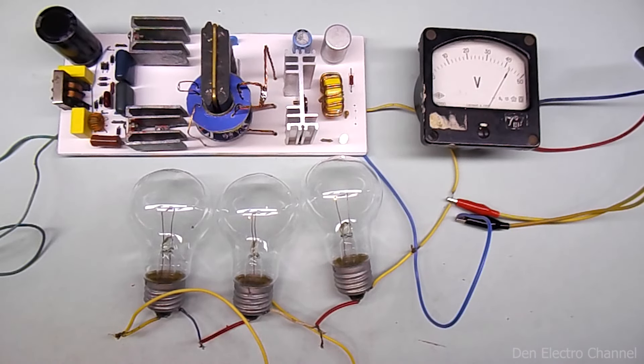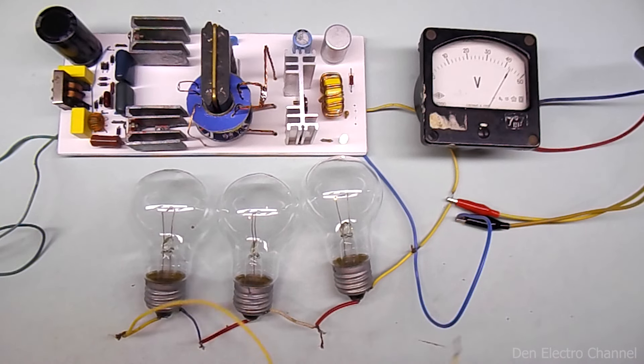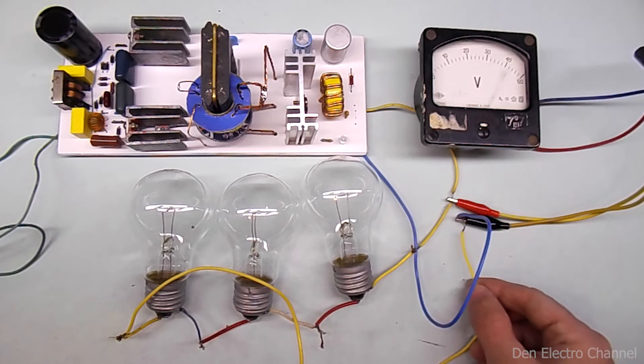Here I have connected three incandescent lamps in series. The power of each light bulb is 40 watts. The supply voltage is 12 volts. The current is approximately more than 3 amperes. I plug it in and see what happens.